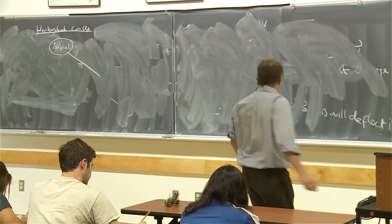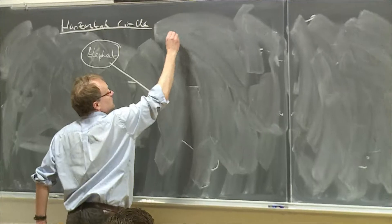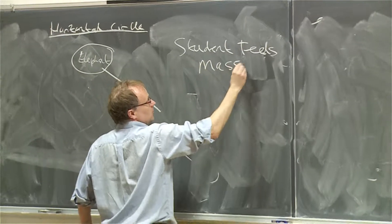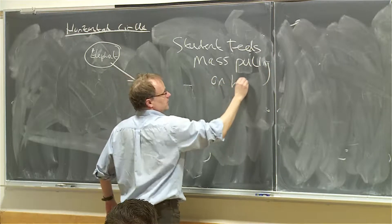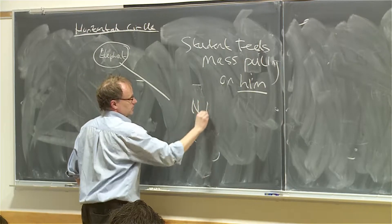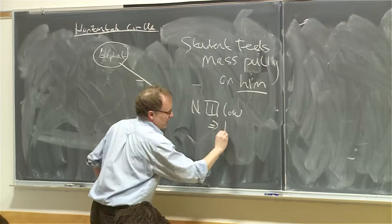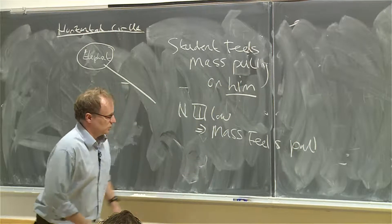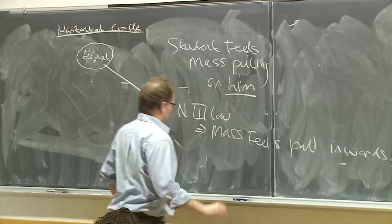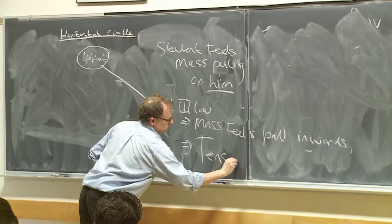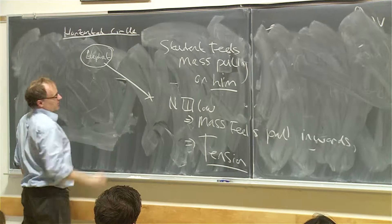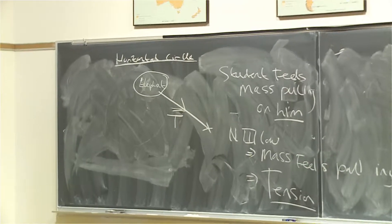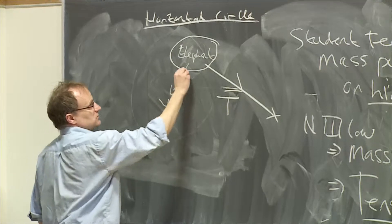So the elephant feels the ball or the elephant, if you like, mass, pulling on him. But Newton's third law says that the mass feels pull inwards. And this is what we call the tension. So we draw, this would be the center of the circle. The tension would be in this direction. The tension's pulling on the elephant. But the elephant's moving in this direction and they are perpendicular.